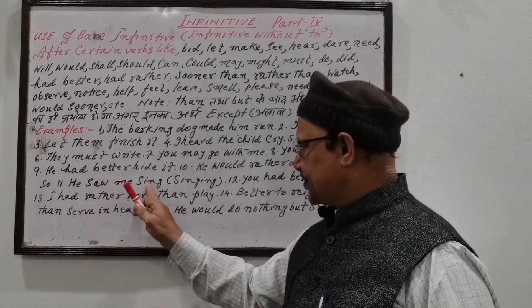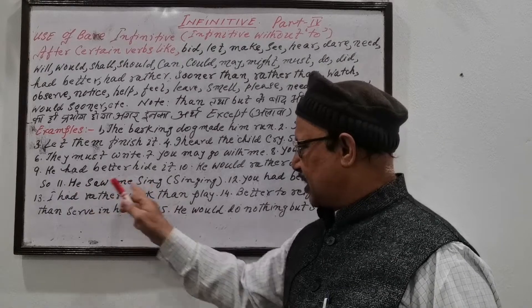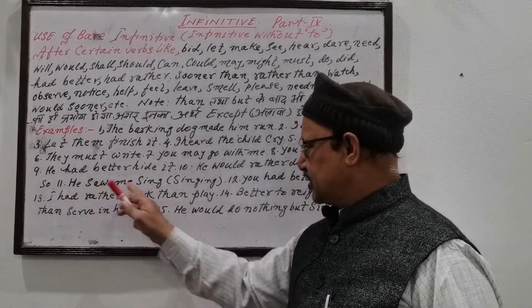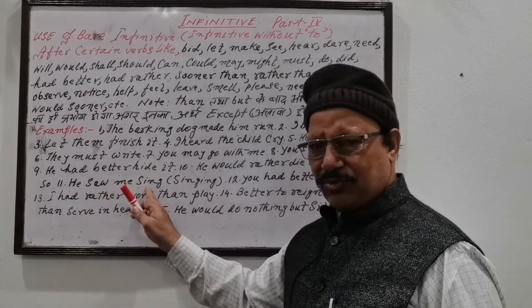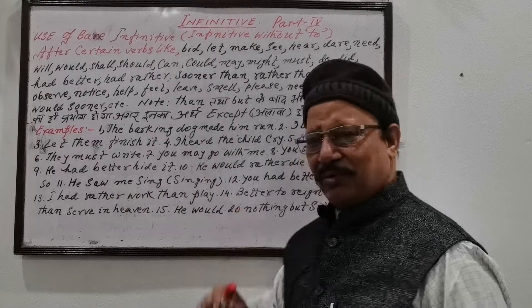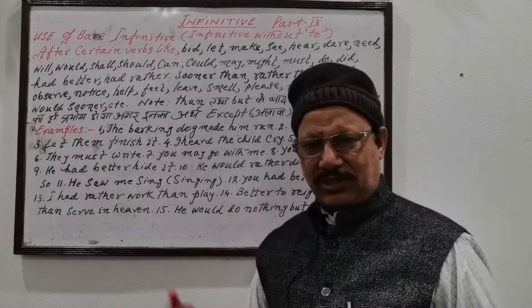'I saw him sing.' 'He saw him sing.' 'He saw me sing.' — He saw me singing. You can also write 'singing' as a participle form, but we haven't covered participles yet — that is a separate branch.